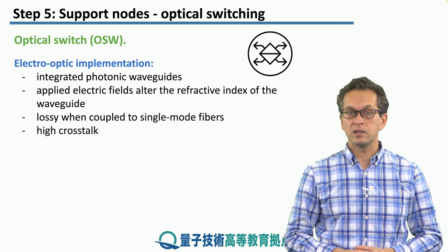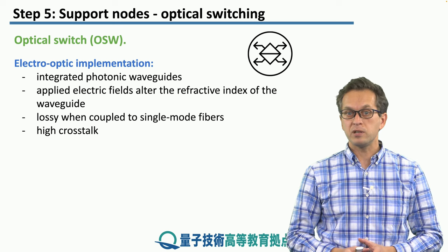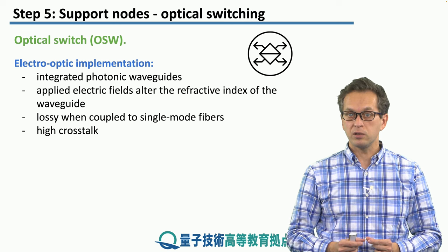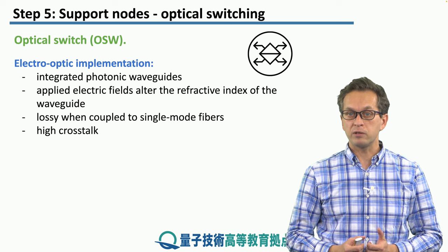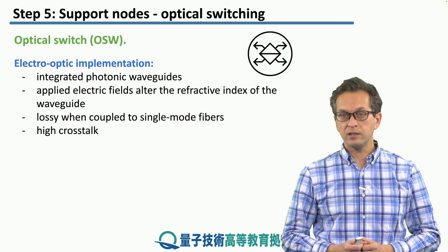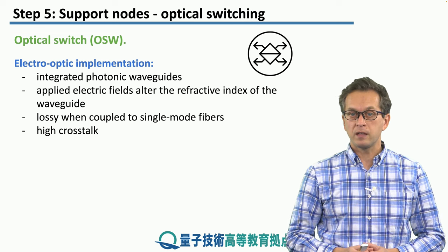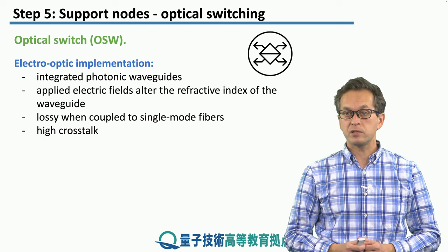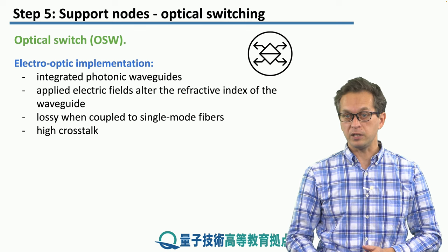Another implementation is what's known as electro-optic implementation. This uses integrated photonic waveguides, where the control is in the form of an applied electric field, which has the ability to alter the refractive index of a waveguide. Disadvantages of this implementation are twofold: they're quite lossy when coupled to single-mode fibers, and there's quite a high chance of crosstalk, especially when compared to mechanical implementations.